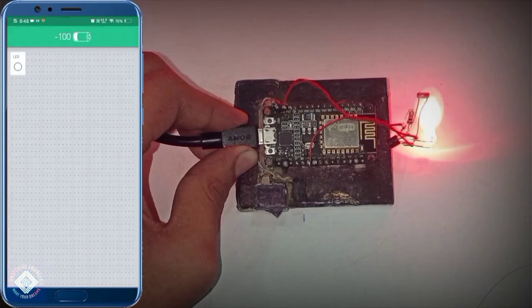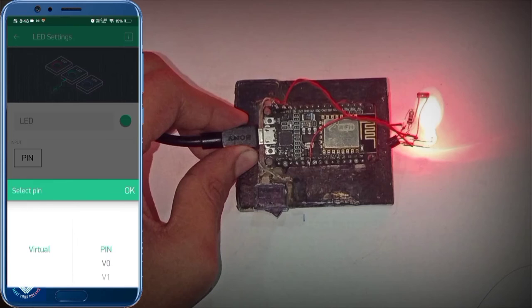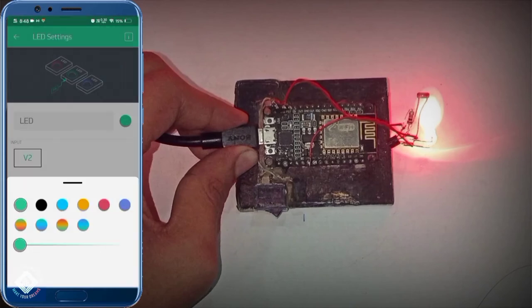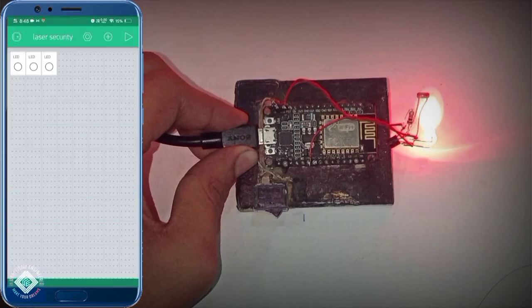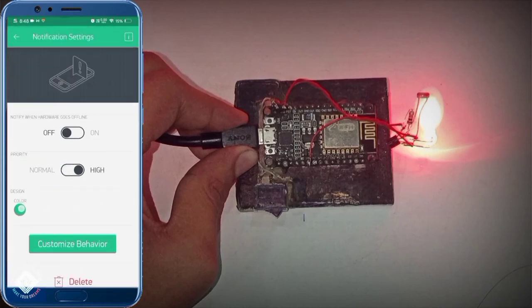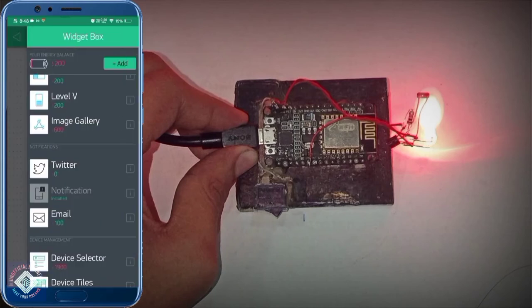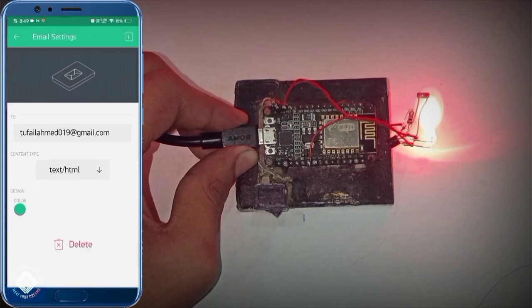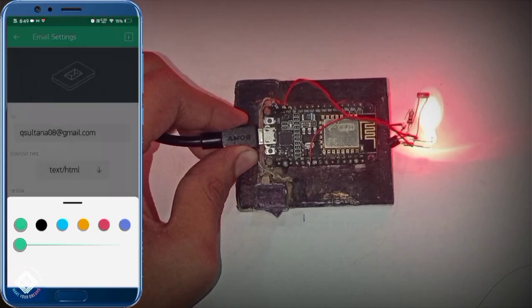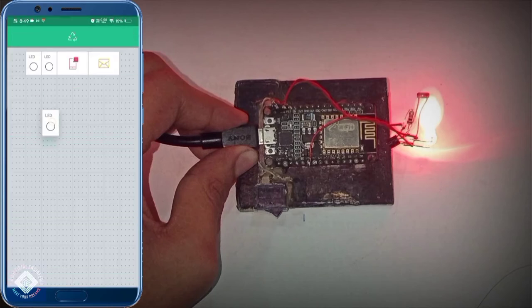So here we will add some widgets. First I will add the LED, we will need three of them, it's optional. Giving the LEDs the virtual pins as V1, V2, and V3 as we specified in the code. You can also give some colors to your LEDs to make it fancy look. After that, click on the notification widget, make the priority high. You receive instant notification, otherwise you will get a delayed notification. Here give your email ID so that you will receive the notification in your email. You can also set the colors and text.